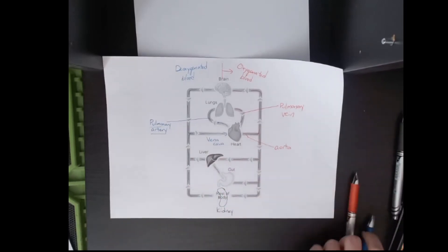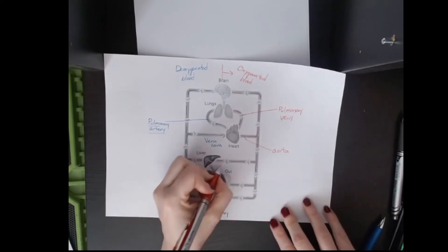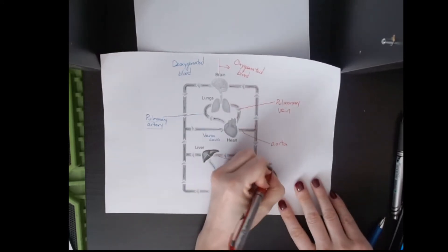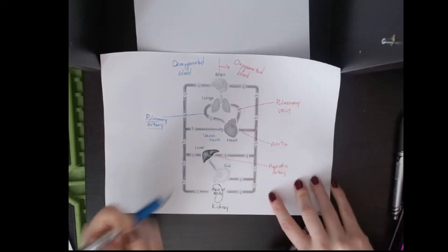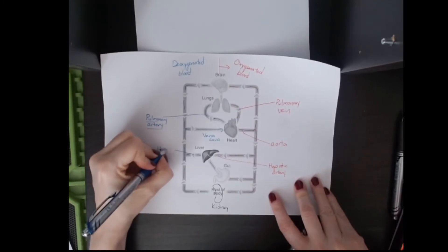So for the liver, you have here going in, anything to do with the liver is called hepatic. So this is the hepatic artery. And then leaving, you have the hepatic vein.